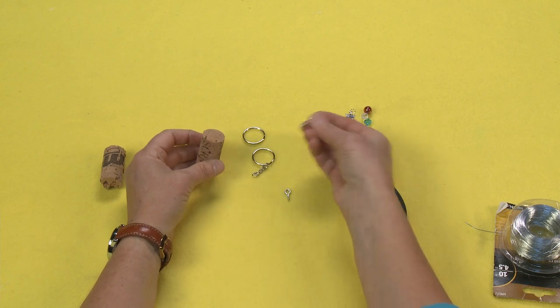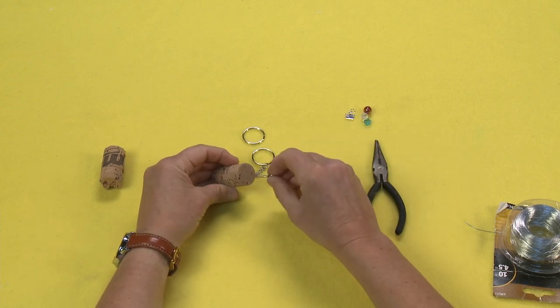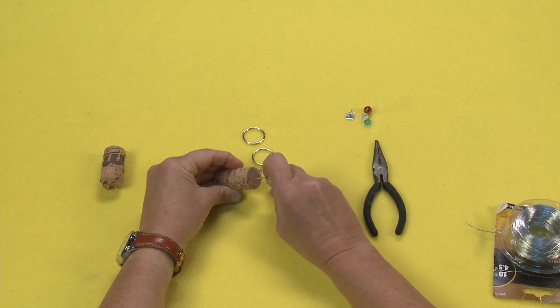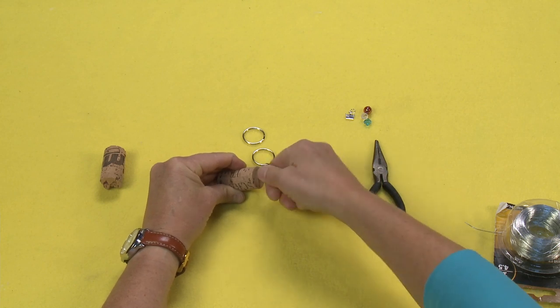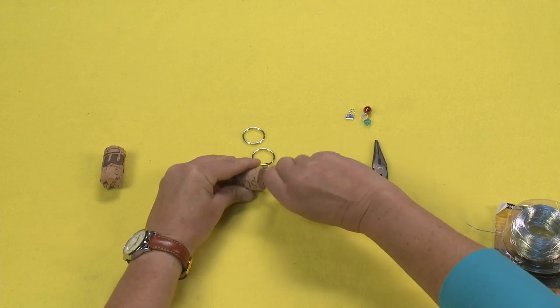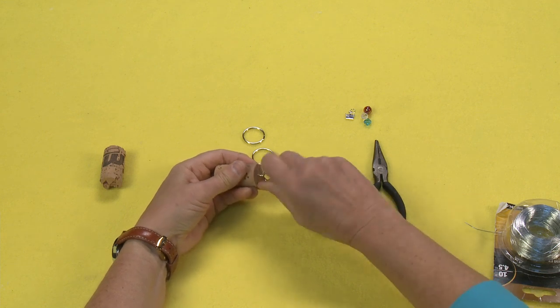The first thing you're going to do is take this large 1-inch screw eye and place it right in the top of your cork. Just squeeze it in there, give it a little push, and then start turning.